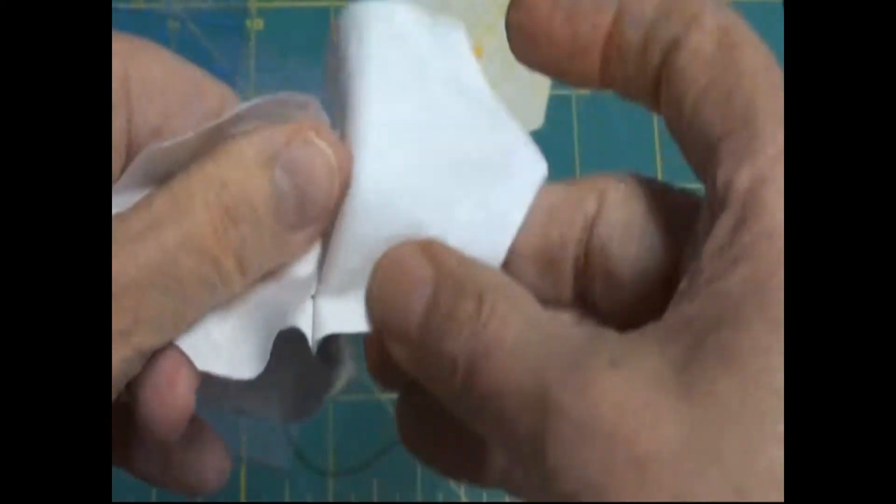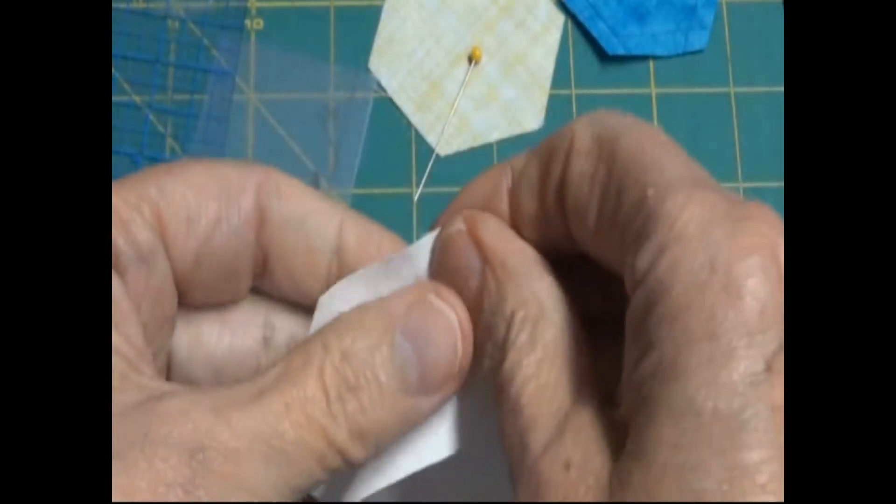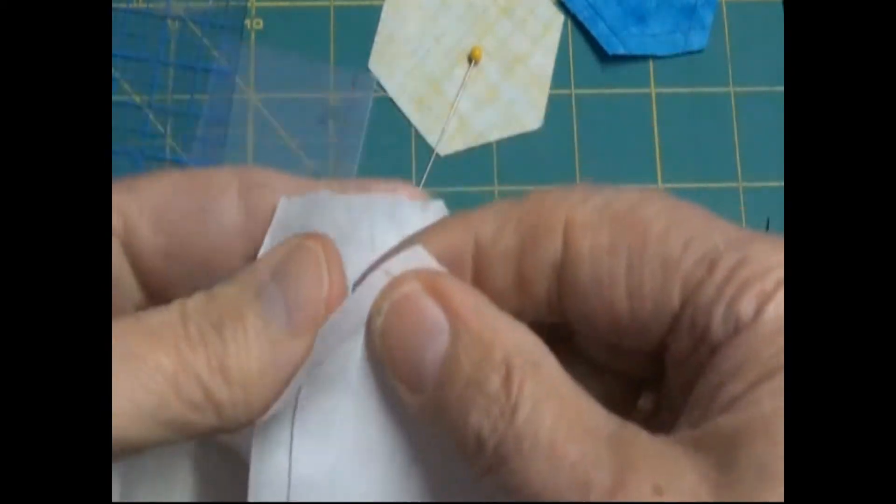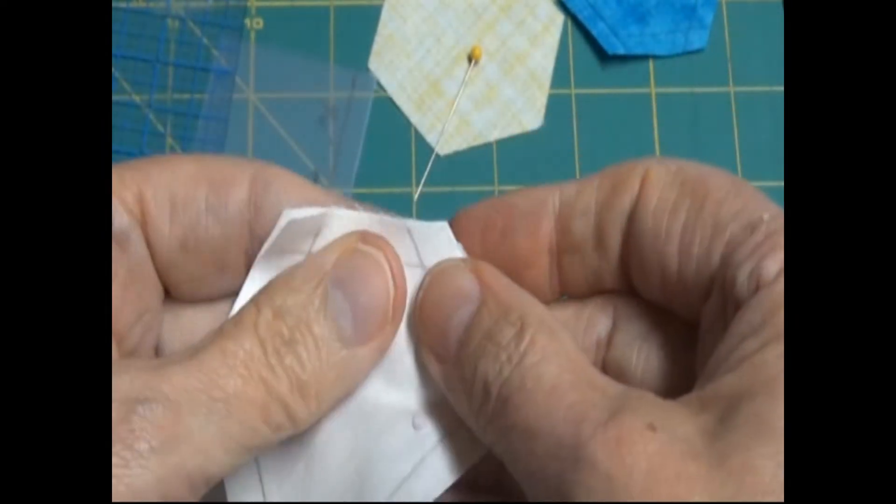I've got two hexagons sewn together at a quarter of an inch. And I'm going to stop a quarter of an inch from each edge. This is important because that's how you're going to put your next hexagon on. The next hexagon would be right sides together. You put it.